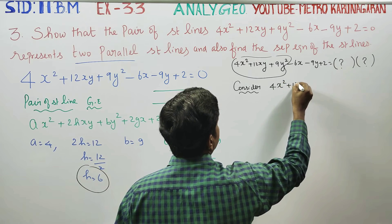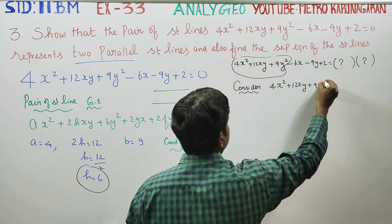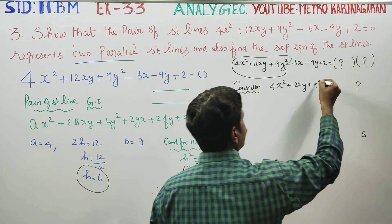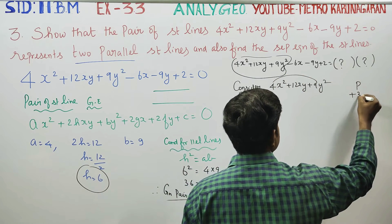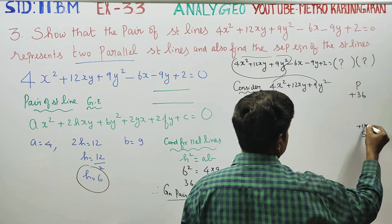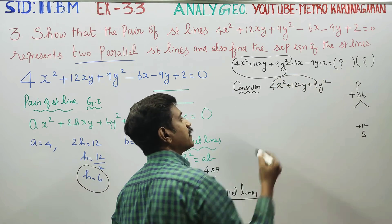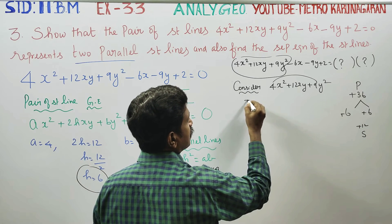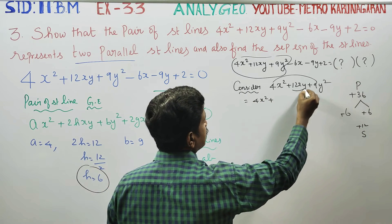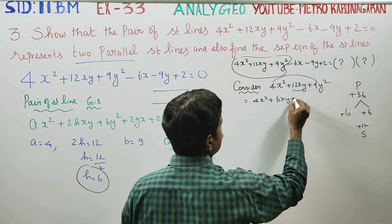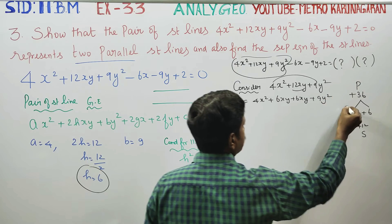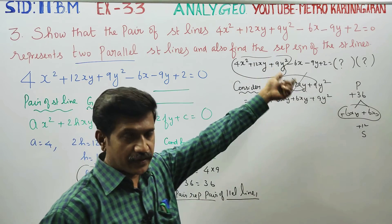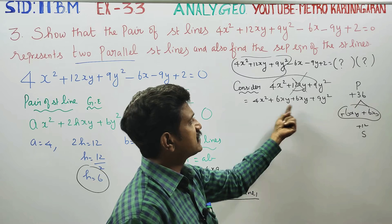4x² + 12xy + 9y² is the product sum. The product sum: 4 × 9 = 36 and the middle term is 12. Split 12xy as 6xy + 6xy. So we get 4x² + 6xy + 6xy + 9y².